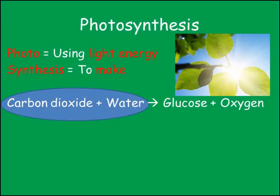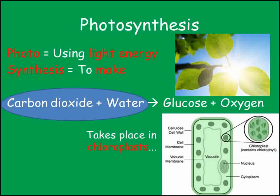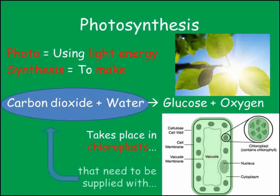Whilst every cell needs the reactants for respiration, only those specialised for photosynthesis need to be supplied with carbon dioxide and water. Photosynthesis happens in chloroplasts in plant cells, which contain a pigment called chlorophyll. This pigment is green, so any part of a plant that is green is able to photosynthesise.